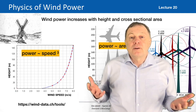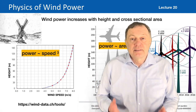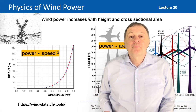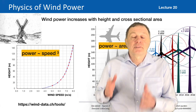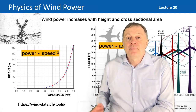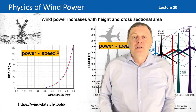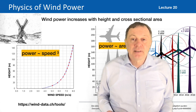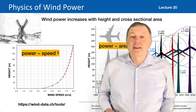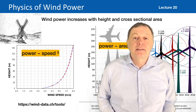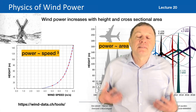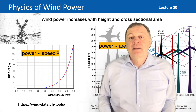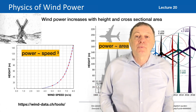For example, if your wind speed in some area is three times as big as in another area, you have 3×3×3 = 27. The wind power is 27 times larger than in the other area. That makes a big difference and is why it's so important to put wind power stations in areas where there's a lot of wind.